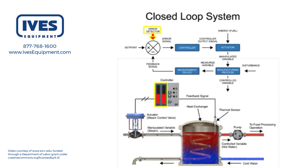The error detector compares the set point to the feedback signal and produces an output proportional to the difference between them. The error signal is the output of the error detector. If the feedback signal and set point are equal, the error signal is zero.